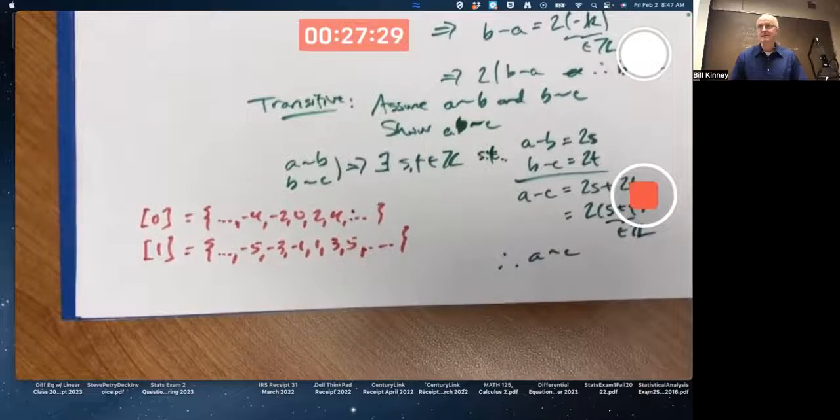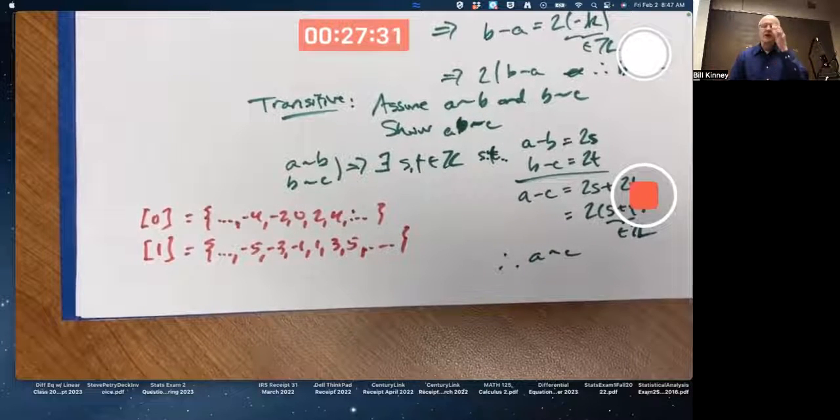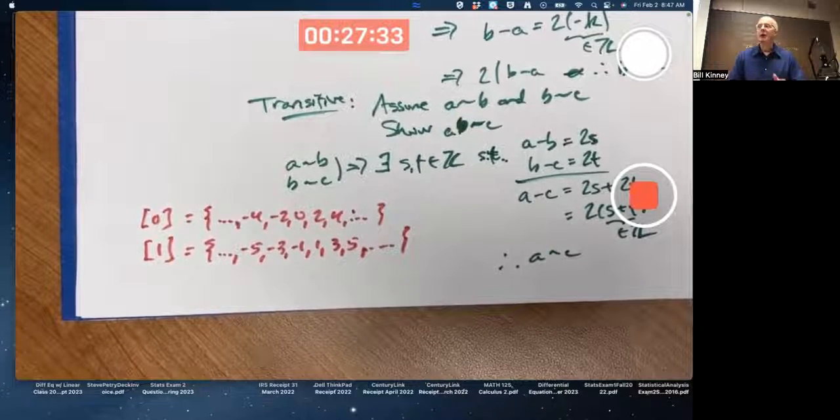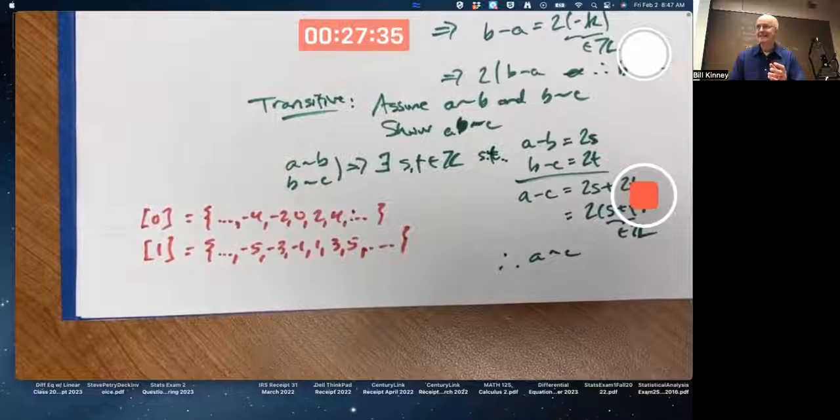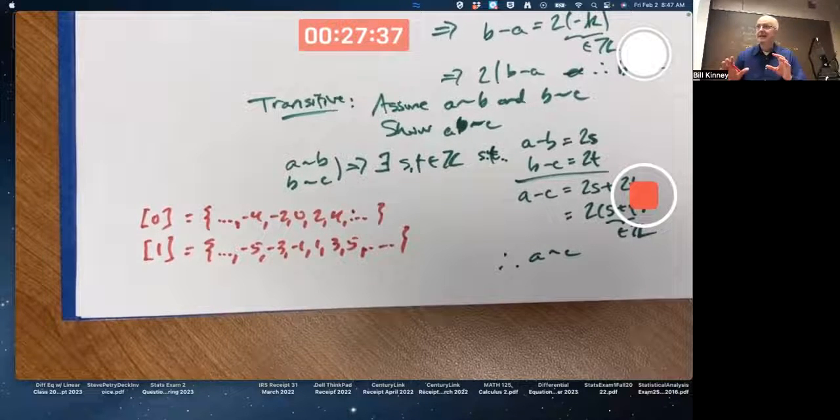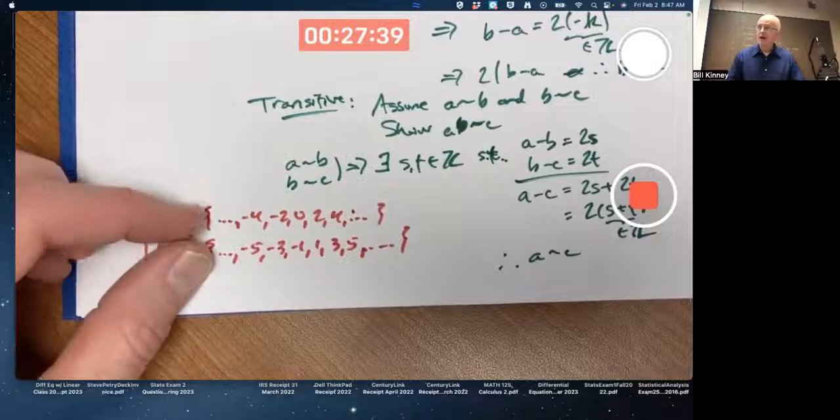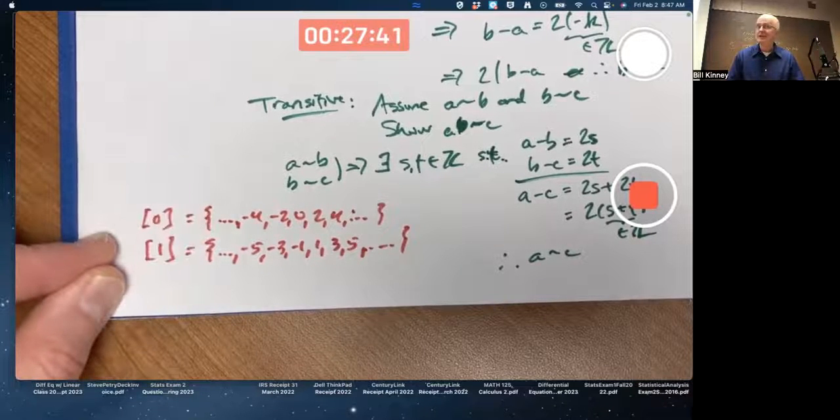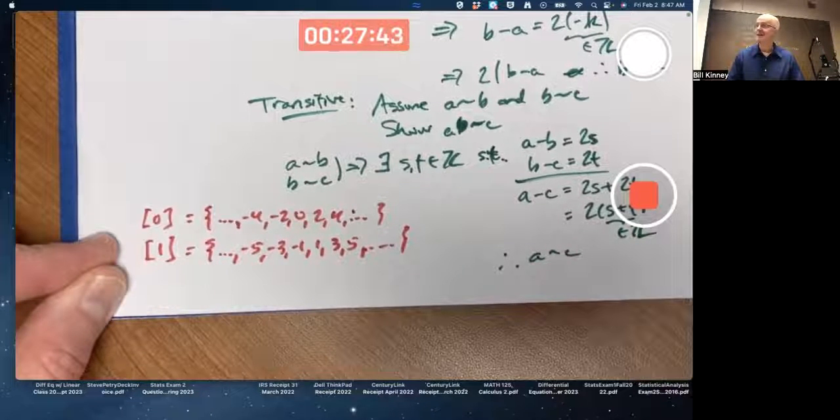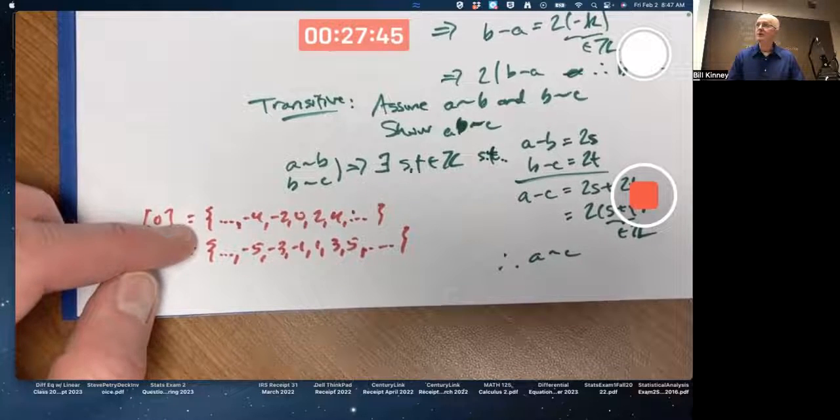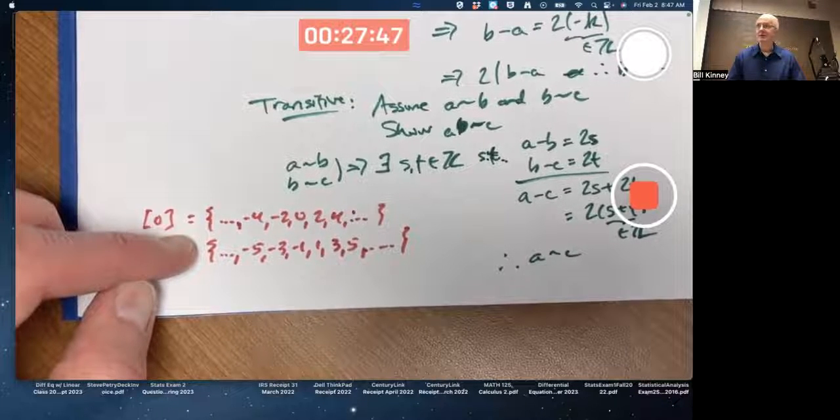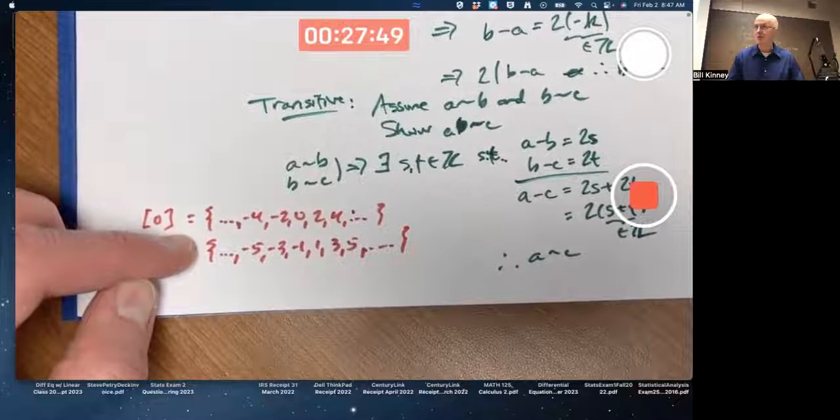Equivalence classes always do this. Equivalence relations always do this, I should say. They always break up the set into pieces that are disjoint, non-overlapping, and whose union is the entire set. No overlap here, and you union these two sets, you get the entire set of integers. It's called a partition. Very important.